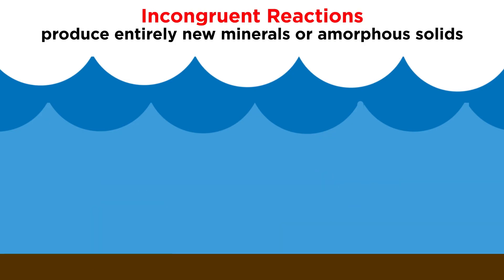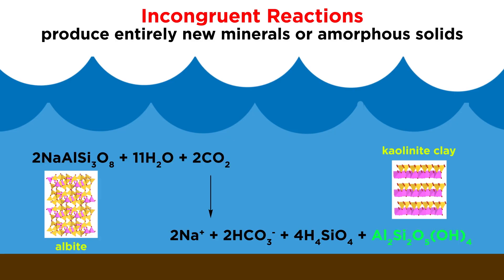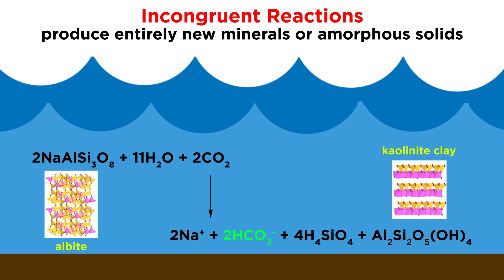By contrast, incongruent reactions produce entirely new minerals or amorphous solids. For example, the sodium feldspar albite reacts with water and carbon dioxide to form kaolinite clay and dissolved sodium ions, bicarbonate ions, and silicic acid, as is shown by this equation here.